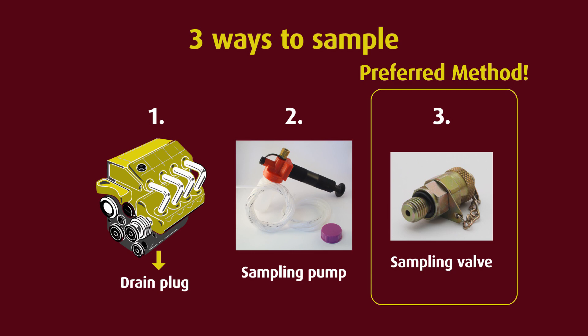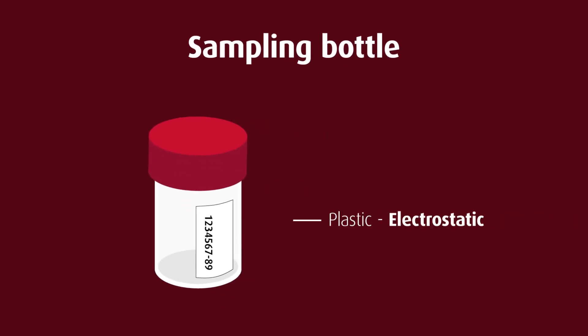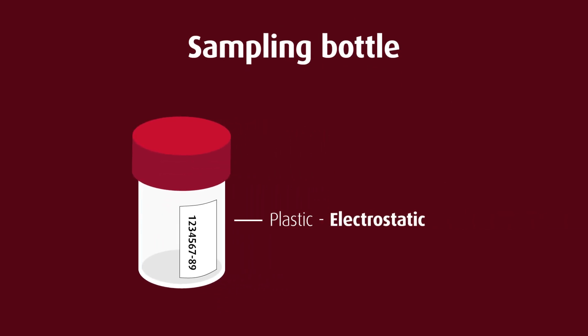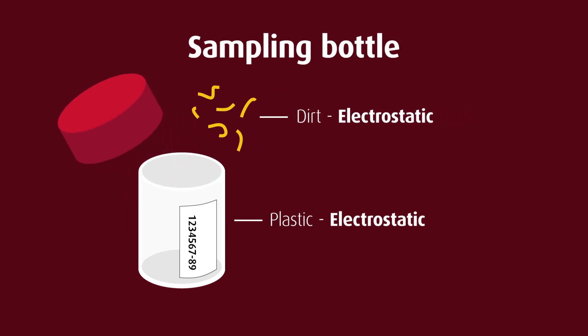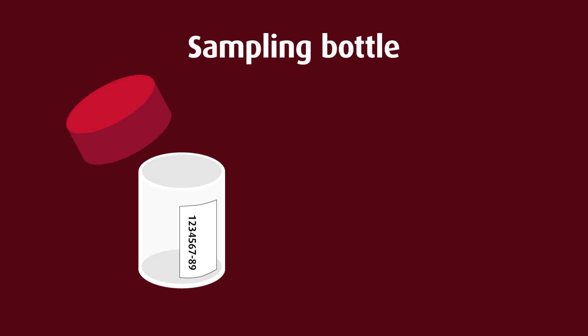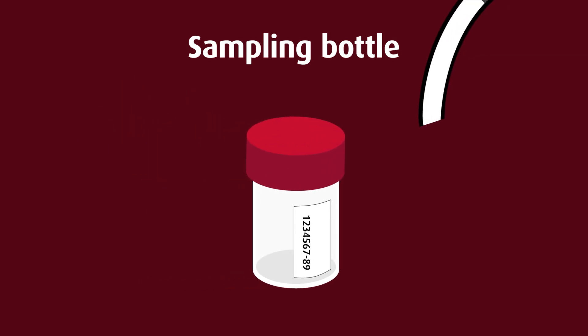Before we examine these three methods in more detail, first a couple of words on the sample bottle. The sample bottles are made of plastic, and plastic has electrostatic properties — so does dirt. The sample bottles are made in clean room conditions. The moment a sample bottle gets opened, the inside of the bottle is exposed to the atmosphere and all the airborne contaminants it contains. It is thus vitally important that the sample bottle remains closed right up until it gets used, is opened only long enough to get the oil in, and thereafter is sealed as soon as possible.